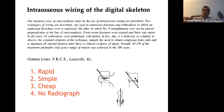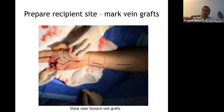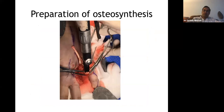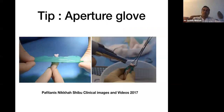Interosseous wiring is rapid, simple, cheap, and doesn't necessarily require a radiograph — groups in Taiwan use it commonly for toe transfer and replantation. When preparing the recipient site, mark vein grafts over the distal third of the forearm and work outside the zone of trauma. A useful tip: put a glove over the digit with a small aperture to protect neurovascular structures when cutting the bone with an oscillating saw — I learned this after injuring a neurovascular bundle on one of my first replants.